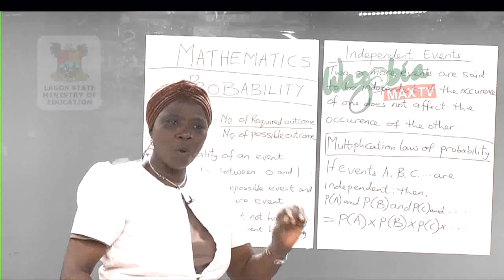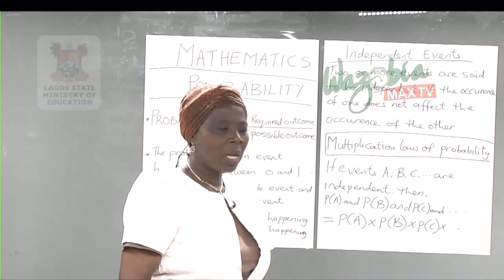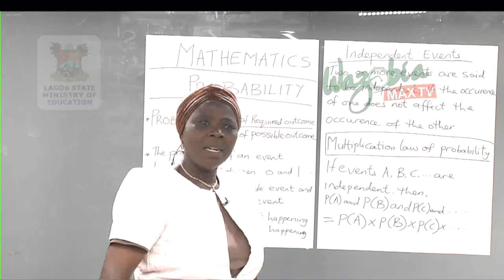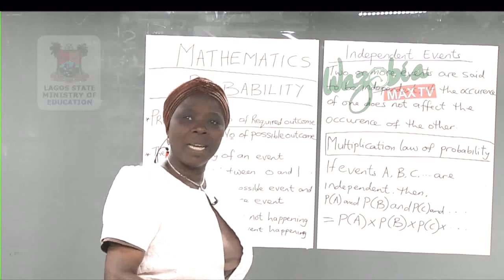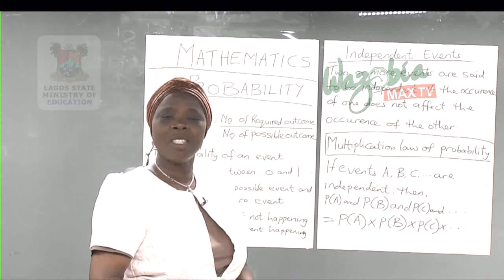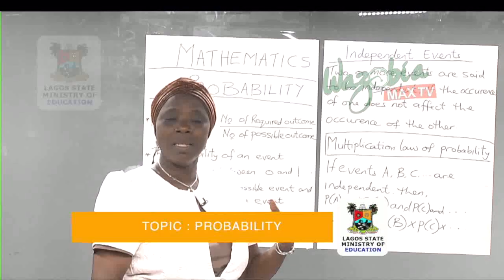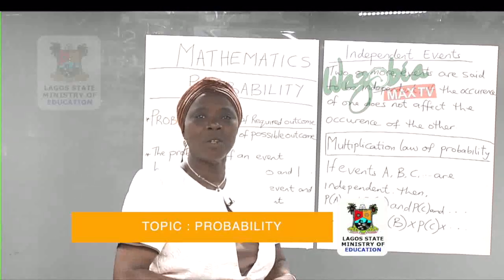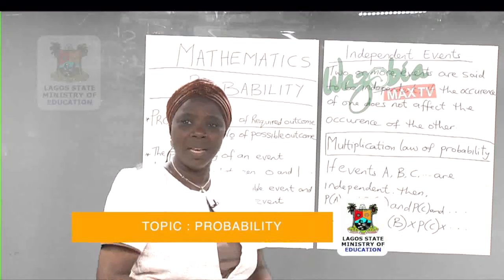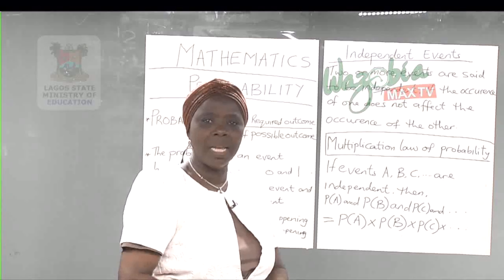For example, in a family where the firstborn is a son, if the mother is pregnant, the sex of the firstborn has no effect on the sex of the unborn baby. The unborn baby can be a boy or a girl. So these two events are basically independent events.